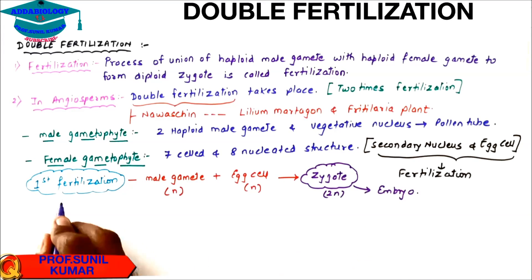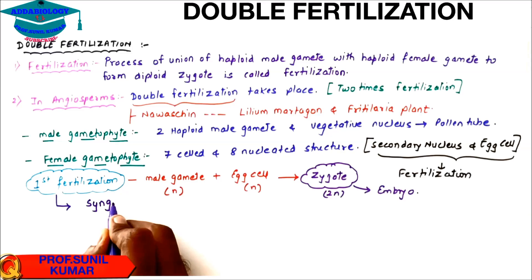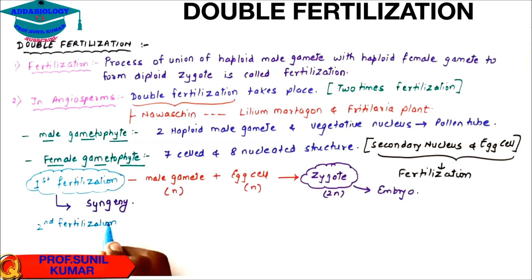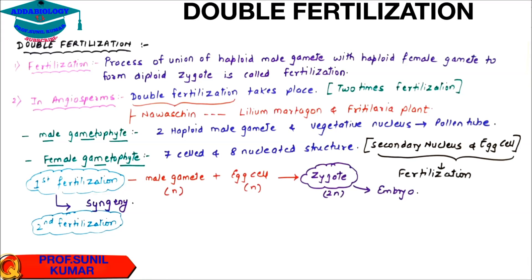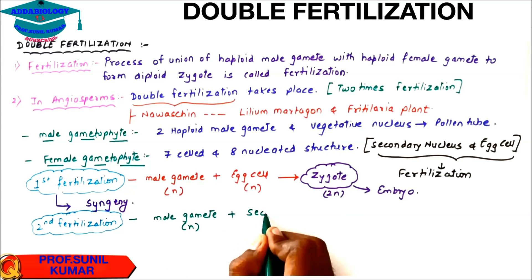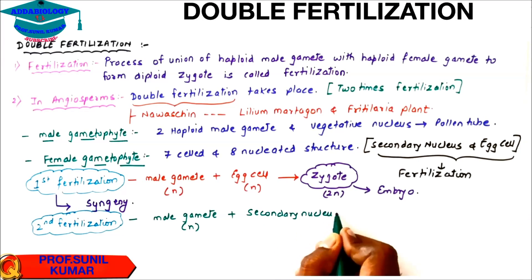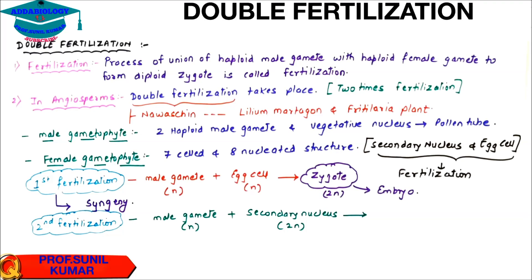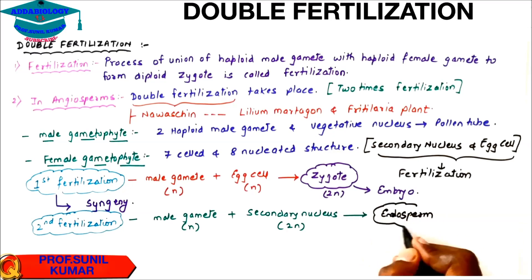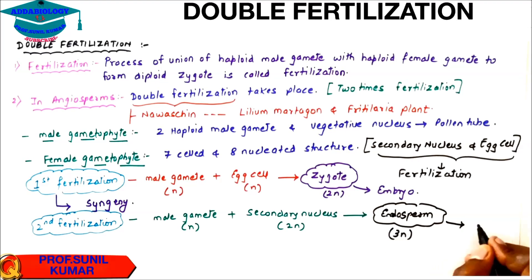This first fertilization is also called syngamy. When we talk about second fertilization, it is the male gamete (haploid) fusing with the secondary nucleus or definitive nucleus (which is diploid, 2n). So male gamete (n) plus secondary nucleus (2n) gives endosperm (3n), which is a nutritive tissue whose role is to provide nourishment.